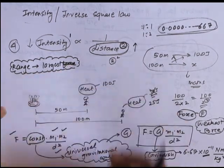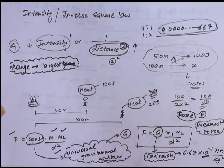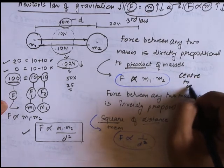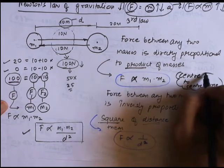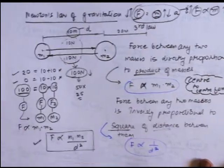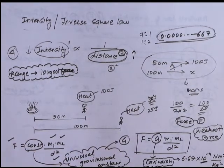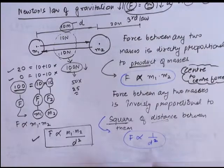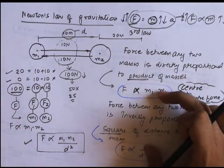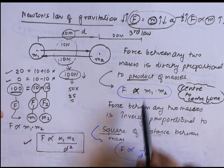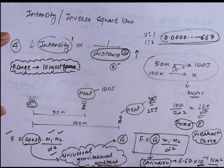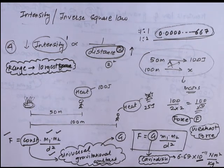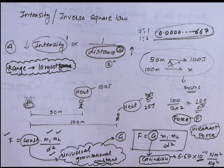Also remember that gravitational force is always a center-to-center force. So this is all about Newton's law of gravitation. In the exam, write the two statements, the mathematical part, combine the equations, replace the proportionality sign with constant G, write its value, and who discovered it — that's it. In the next class we'll discuss Kepler's law.